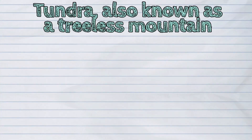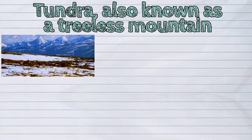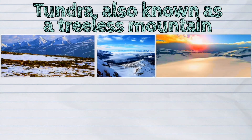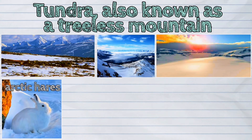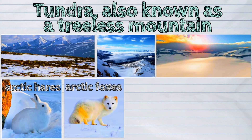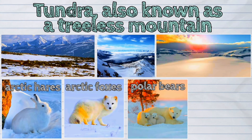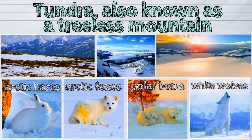A tundra, also known as a treeless mountain, can be found in the Northern Hemisphere. Underneath the top layer of its soil is a permanently frozen soil called the permafrost. Animals that live in the tundra include Arctic hare, Arctic foxes, polar bears, and white wolves.